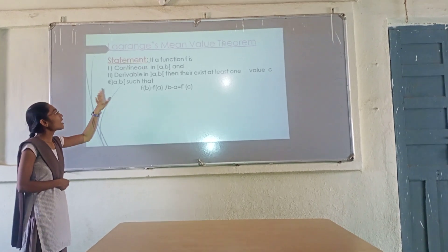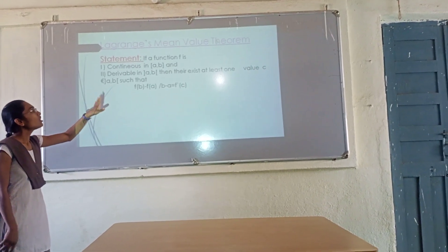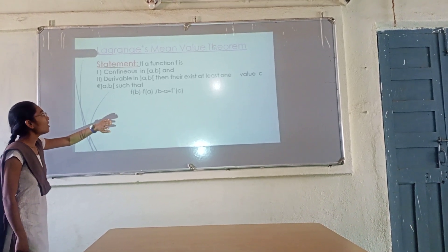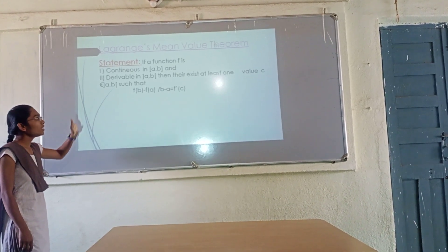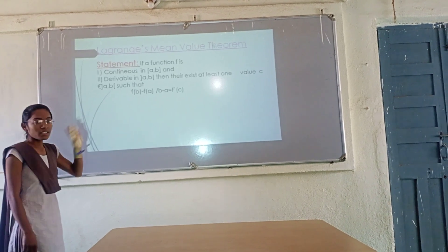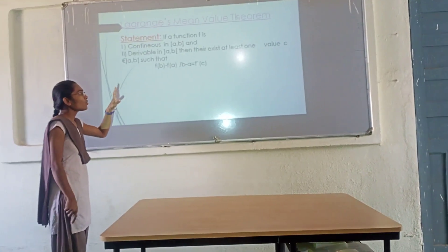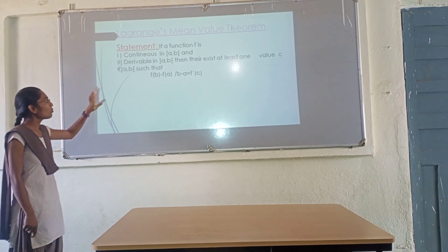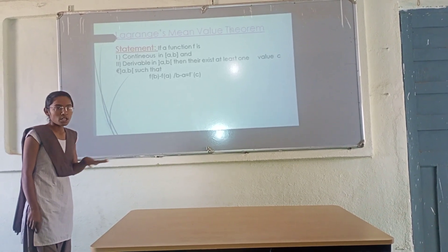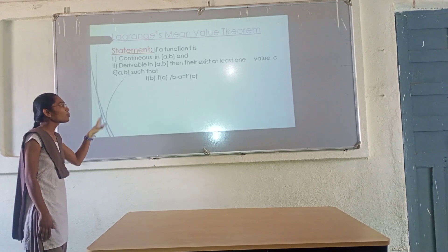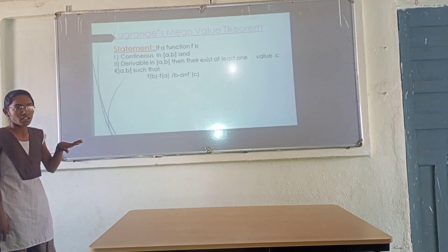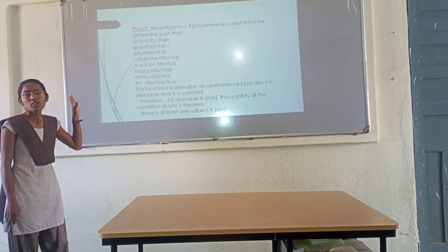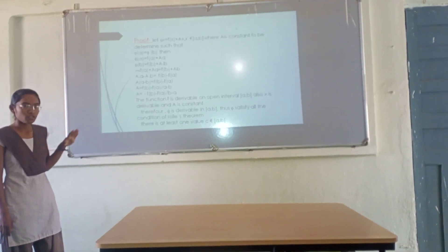The theorem is stated as: if a function f is continuous on the closed interval [a, b] and derivable on the open interval (a, b), then there exists at least one value c belonging to the open interval (a, b) such that f(b) minus f(a) divided by b minus a equals f'(c). This is the statement of Lagrange's Mean Value Theorem.